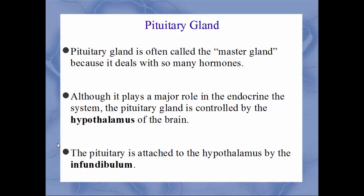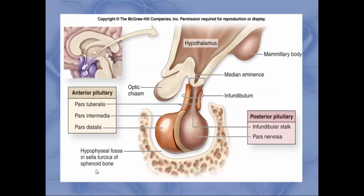We'll spend most of this chapter on the pituitary gland, often called the master gland because it deals with so many hormones. Even though it's the master gland, it is itself controlled by the hypothalamus. The pituitary is attached to the hypothalamus by a structure called the infundibulum — a stalk-like feature. The pituitary has two distinct portions: the anterior lobe and the posterior lobe.